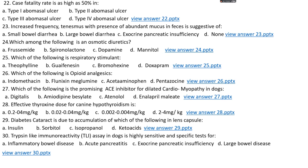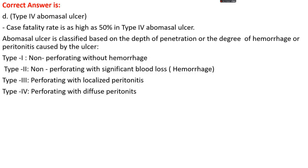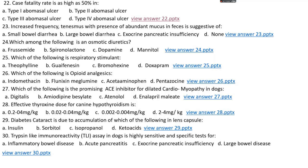Question number 22. Case fatality rate is as high as 50% in: options A, type 1 abomasal ulcer; options B, type 2 abomasal ulcer; option C, type 3 abomasal ulcer; or options D, type 4 abomasal ulcer. The right answer is option D, type 4 abomasal ulcer. Abomasal ulcers are classified on the basis of depth of penetration or degree of hemorrhage or peritonitis: type 1 is non-perforating with no hemorrhage; type 2 is non-perforating with significant blood loss; type 3 is perforating with localized peritonitis; type 4 is perforating with diffuse peritonitis, which has the highest case fatality rate.